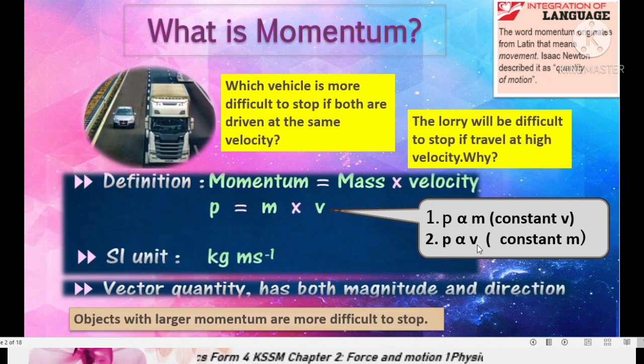The second one, p directly proportional to velocity. Let's say the value of m is constant, same mass. So the one with higher velocity will have higher momentum. So for this lorry, for a greater mass and greater velocity, it will travel with greater momentum.